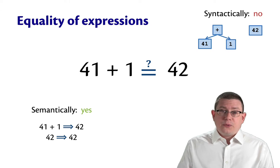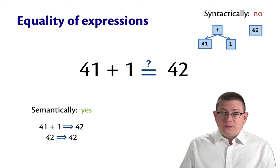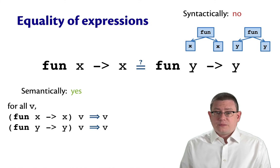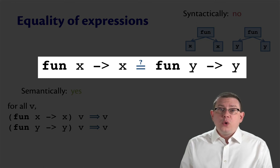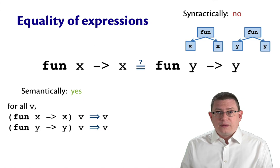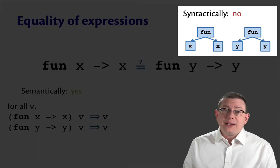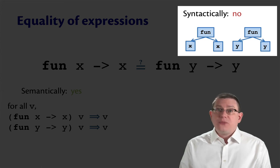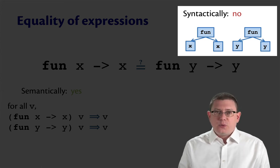Now, that was for a fairly simple expression. Let's look at a slightly more complicated expression. What about functions? Here are two versions of the identity function: fun x arrow x equal to fun y arrow y. Well, once more, syntactically, the answer has to be no, because there are two different variable names in use here, x and y.